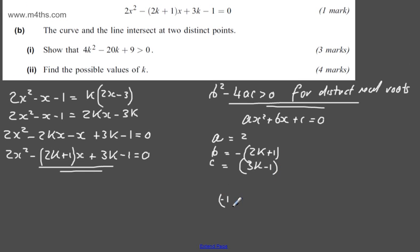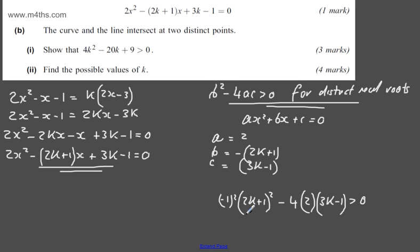Computing b squared minus 4ac: b squared is negative 1 squared times 2k plus 1 squared, which simplifies to 2k plus 1 squared. Then minus 4 times a, which is 2, times c, which is 3k minus 1, all greater than 0. Expanding: 4k squared plus 2k plus 2k plus 1, then minus 8 times 3k gives minus 24k, plus 8, all greater than 0.